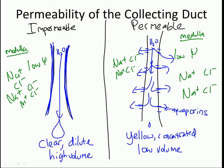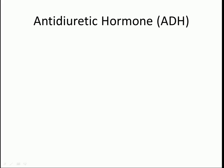So how does the collecting duct know whether to be permeable or impermeable? This comes down to a hormone called antidiuretic hormone. Anti means not, diuretic means water loss — so this is a hormone that prevents water loss.